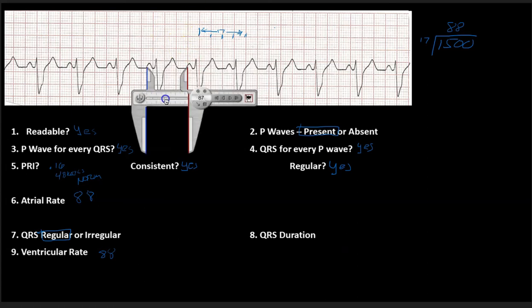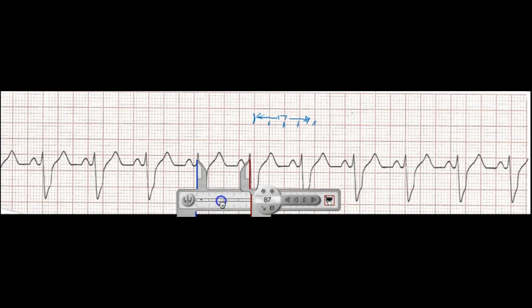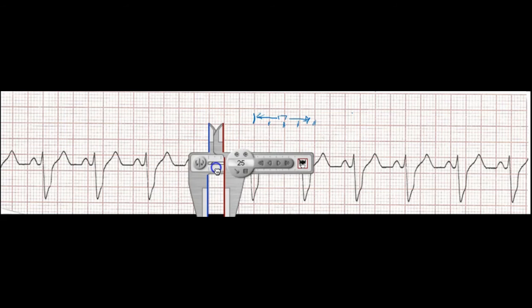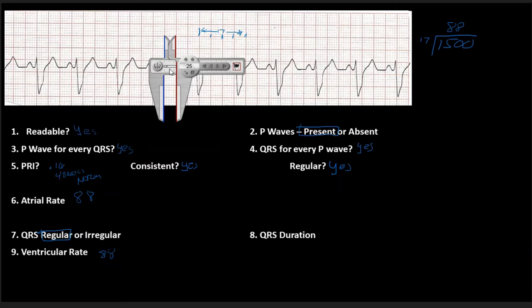Now I need to look at my QRS duration. So here's where I started, or here's where I left off with my PR. And I'm going to come into about right here. And when I move this, I notice that I am about four blocks, right? So I'm about four blocks in width. So my QRS duration is here greater than 0.12. So when I look at this, everything is normal with the exception of the QRS duration. So this is the abnormality.